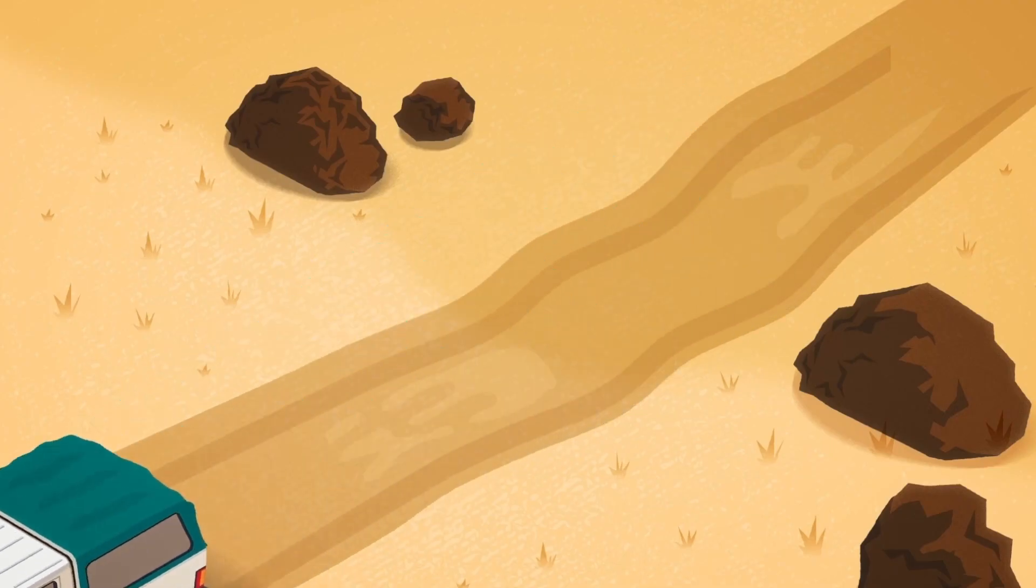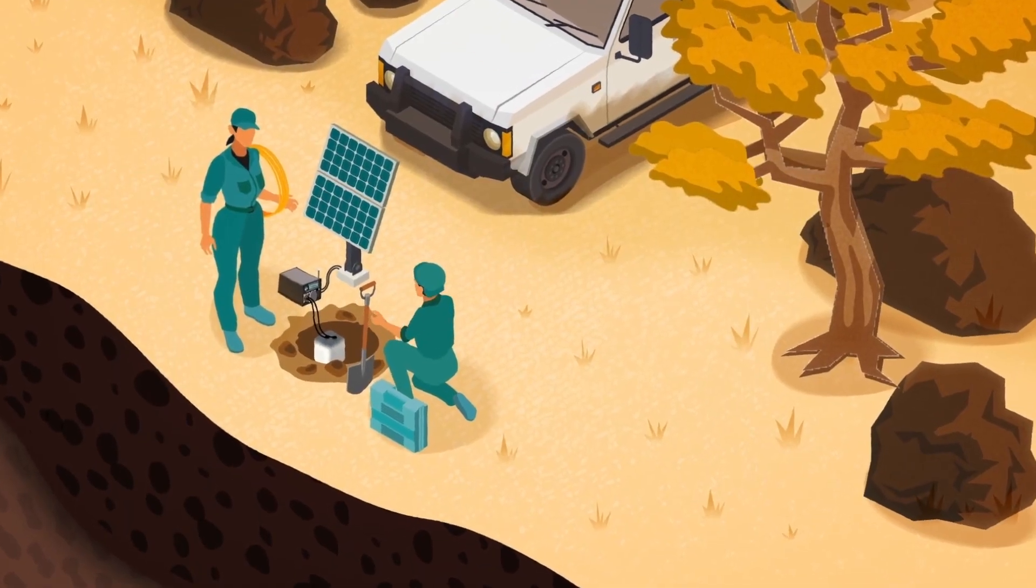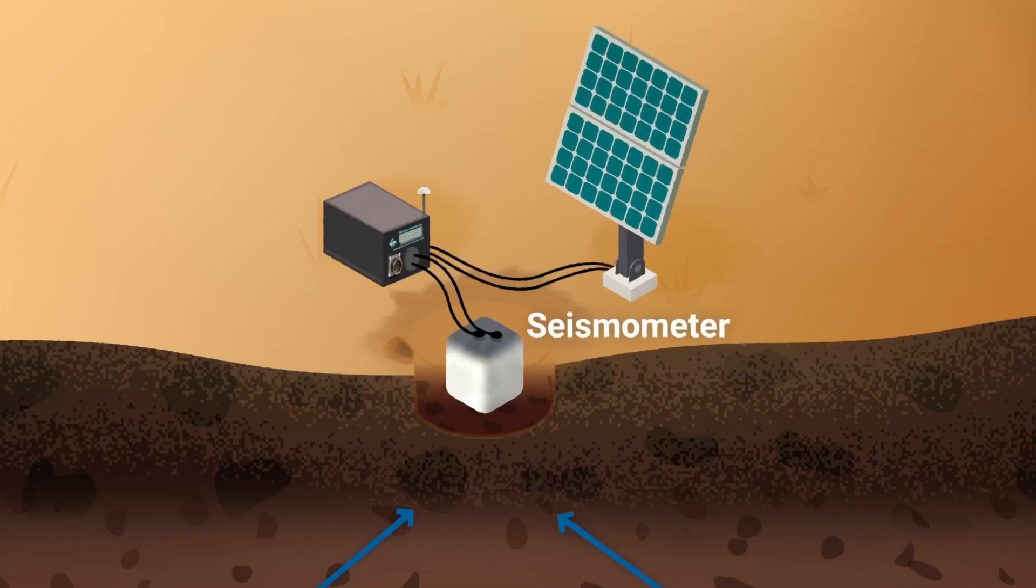Each station has a seismometer buried just below the surface which registers seismic waves, a digitiser that stores the data, a solar-powered battery to run the instruments, and a GPS for consistent time reference across stations.